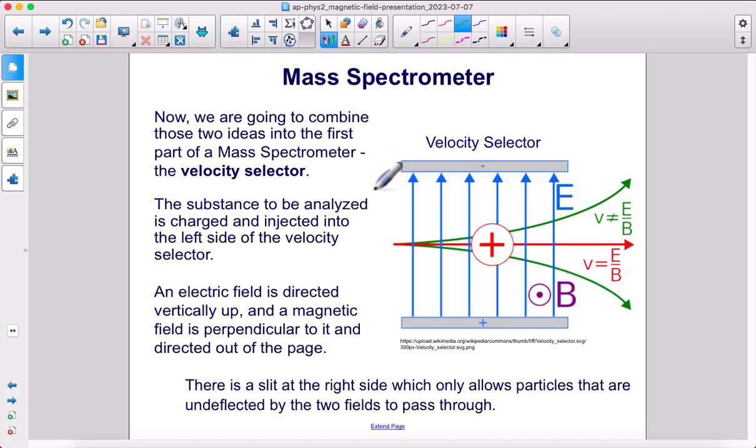Now we're going to combine those two ideas into the first part of a mass spectrometer, the velocity selector. The substance to be analyzed is charged and injected into the left side of the velocity selector. An electric field is directed upwards, and a magnetic field is put perpendicular to it and directed out of the page. And here there's going to be a slit at the right side, which only allows particles that are undeflected by the two fields to pass through.